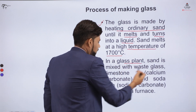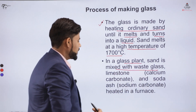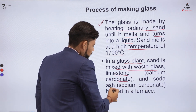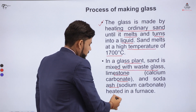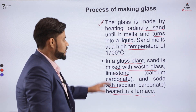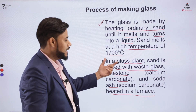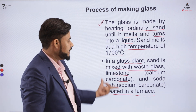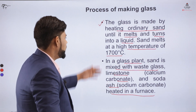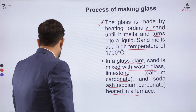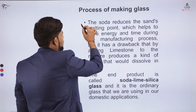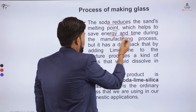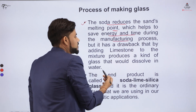In the glass plant, the sand is mixed with waste glass, and limestone — also called calcium carbonate — is also mixed, along with soda ash, and it is heated in a furnace. This soda reduces the sand's melting point, which helps to save energy and time during the manufacturing of the glass.